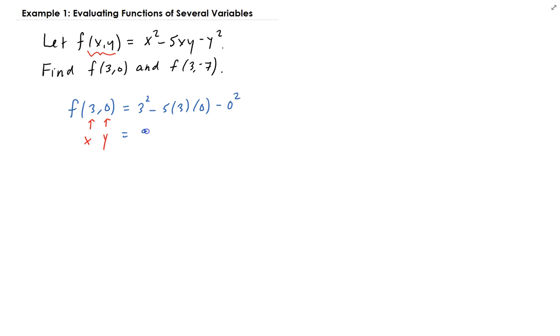So this is going to give us 9, 3 squared is 9, minus 0 minus 0, and that gives us 9. So therefore this tells us that f of 3, 0 is equal to 9.